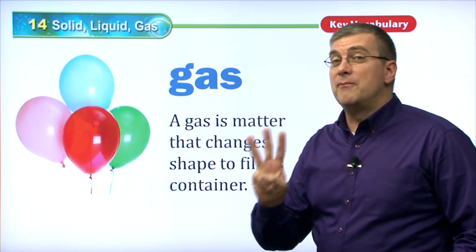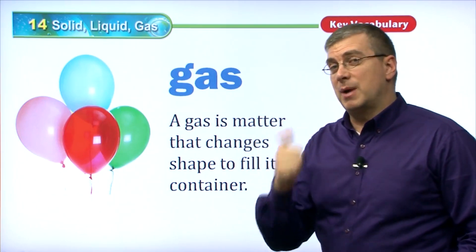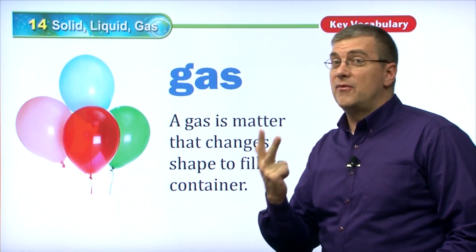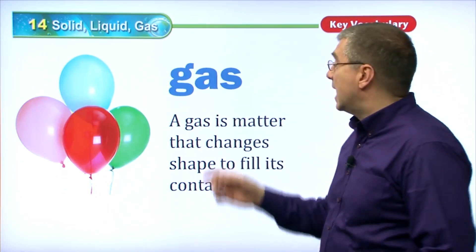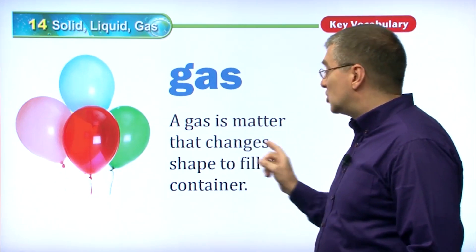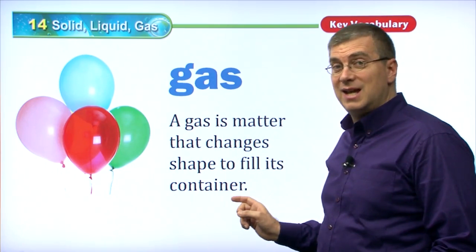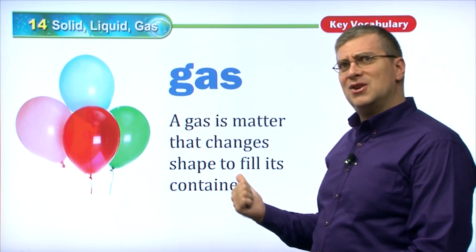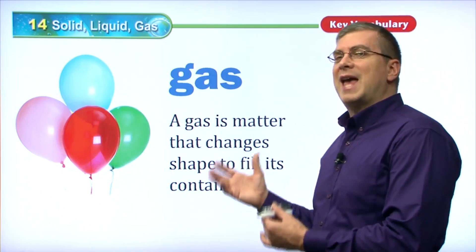And then there's our third form of matter. We talked about solid and liquid. The third form of matter is a gas. A gas is matter that changes shape to fill its container. Wait — that's similar to the definition of liquid. So what is unique about gas? What makes gas different from liquid?